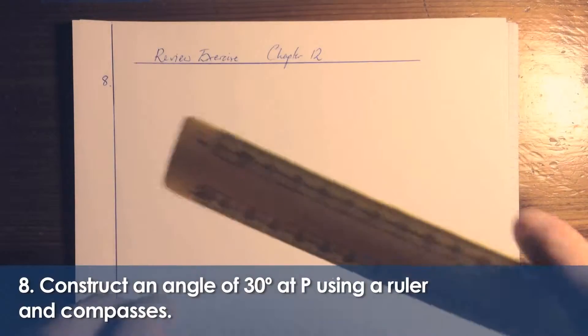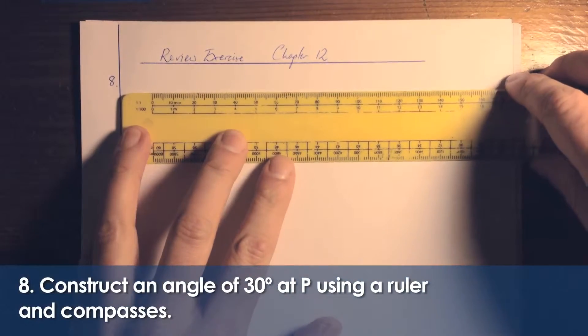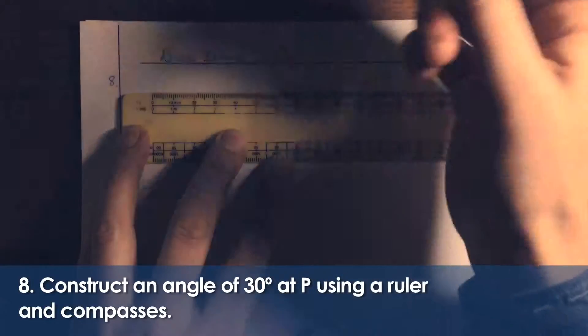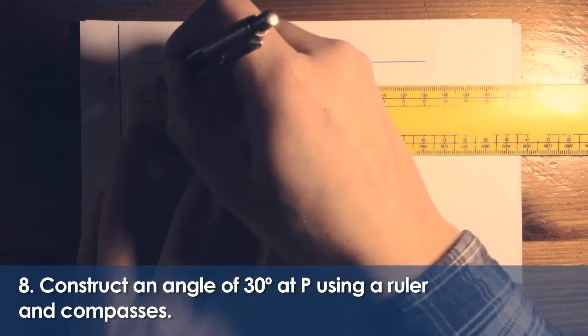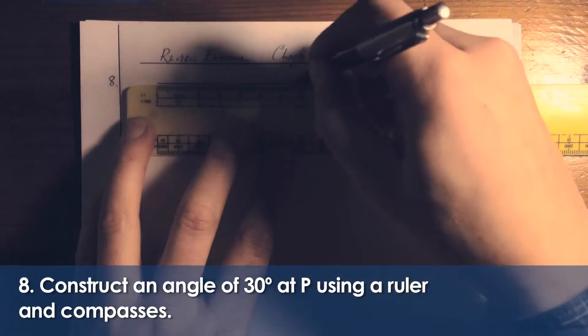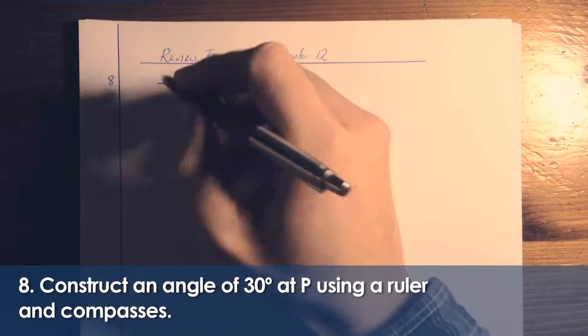In chapter 8, the key thing is that we're drawing an angle of 30 degrees, but we're not doing it with a protractor. It says specifically to use compasses and ruler.